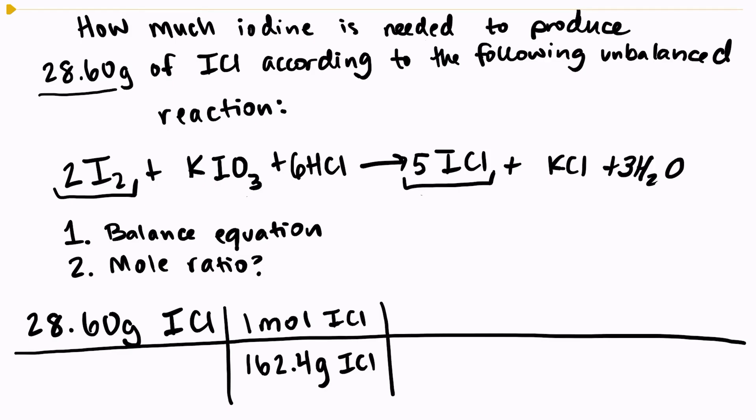The next step is to use my molar ratio. So I'm trying to go from moles of ICL into moles of I2. So my moles of ICL need to go on the bottom so that unit will cancel out, and my moles of I2 will go on the top of my fraction